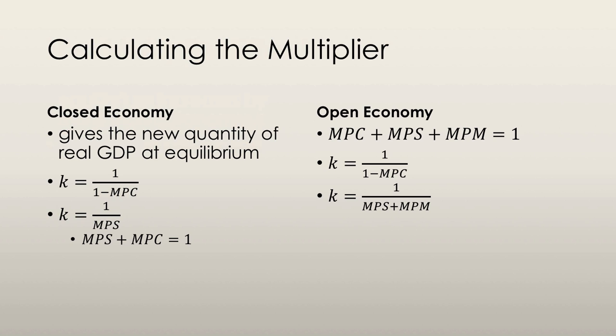Not all spending is counted as consumption — some is counted as imports. We keep the same formula: k = 1 over 1 minus MPC. But in this case, 1 minus MPC equals MPS plus marginal propensity to import. So the second equation is k = 1 over marginal propensity to save plus marginal propensity to import.